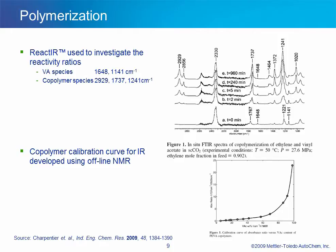The functional group specificity of the mid-infrared typically allows for the monitoring of multiple species at the same time. Vinyl acetate monomer concentration was tracked by the decrease in the 1648 wavenumber peak. Copolymer bands appear at 2929, 1737, and 1241 wavenumbers. A calibration curve for vinyl acetate concentration was created using offline NMR results and the peak ratio of 1737 to 2929 wavenumbers. Knowing the monomer feed compositions and the copolymer compositions derived from the calibration curve, the reactivity ratios can then be determined with known equations.